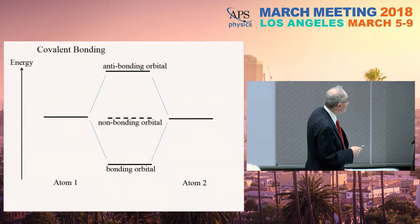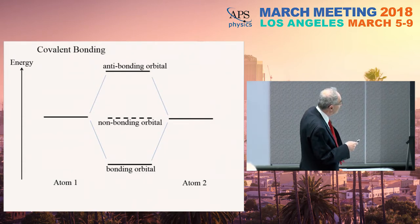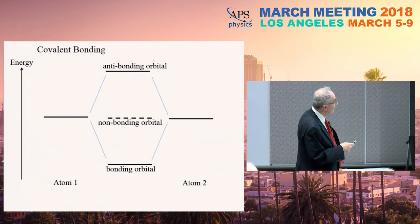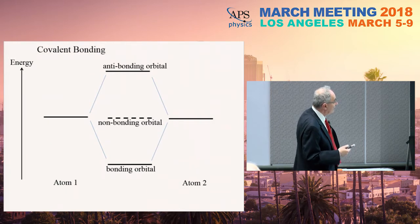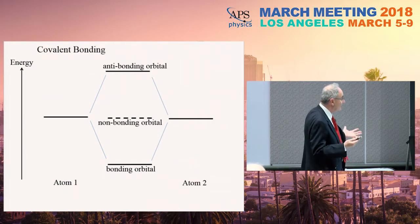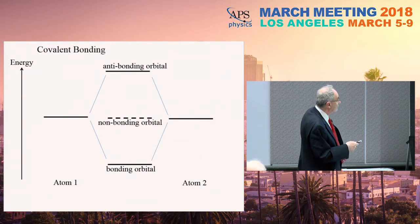I fall back to chemistry. If you remember, you have two molecules — say the hydrogen molecule — and when two levels interact, they repel each other. One becomes an antibonding orbital and the other becomes a bonding orbital. The bonding orbital is the chemical bond. But if you have a dangling bond — if there is no chemistry — you're left with the original energy level and a non-bonding orbital, right in the middle.